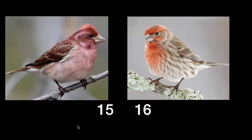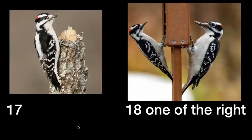Numbers fifteen and sixteen — Purple Finch or House Finch? The House Finch is more common and less purple — it's more red. The Purple Finch is more purplish-red. Numbers seventeen and eighteen — Hairy or Downy Woodpecker? The Downy is smaller than the Hairy.